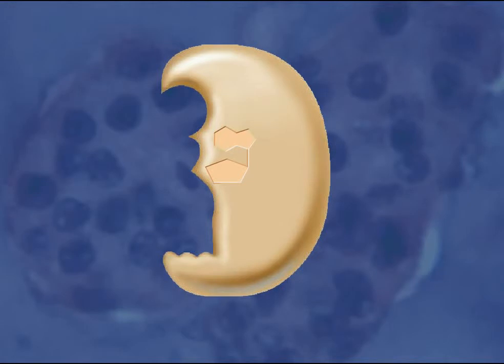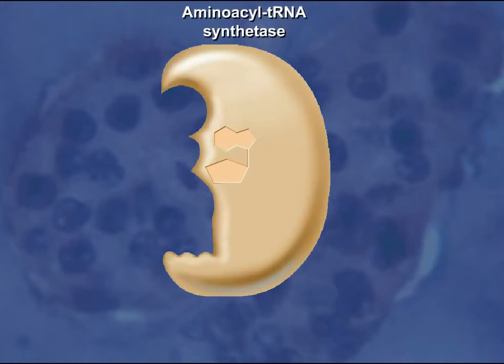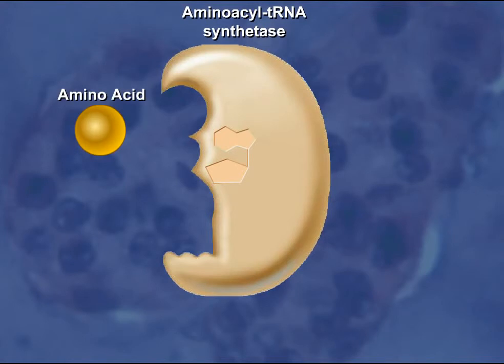Aminoacyl-tRNA synthetases catalyze the formation of charged transfer RNA. To begin the process, a specific aminoacyl-tRNA synthetase binds a particular amino acid and also a molecule of ATP at its active site.